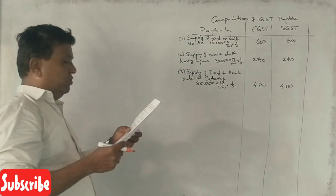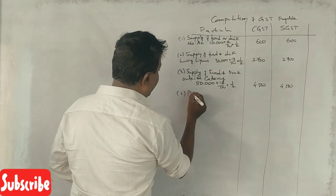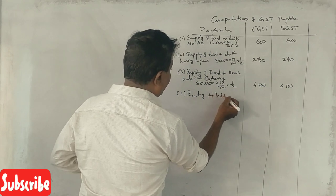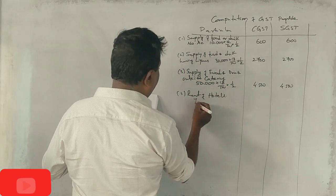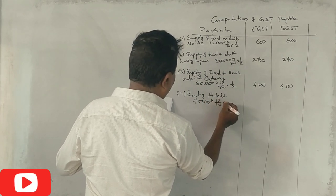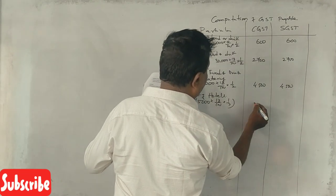Rent of hotel rooms at 18% GST. Rent of hotels is 75,000. Here we have 18%, half of CGST 6,750.